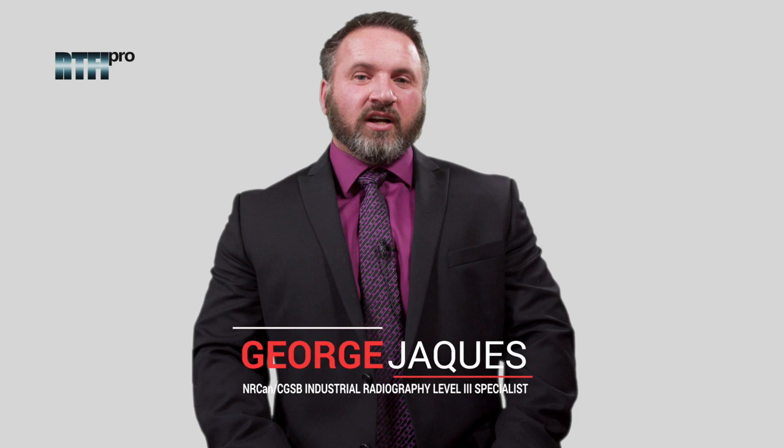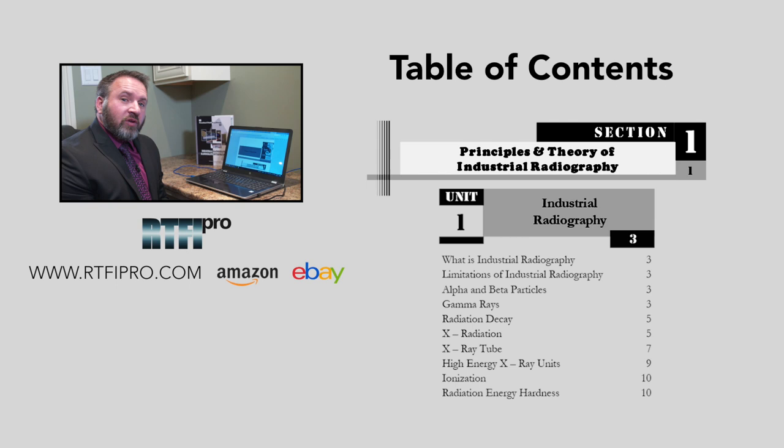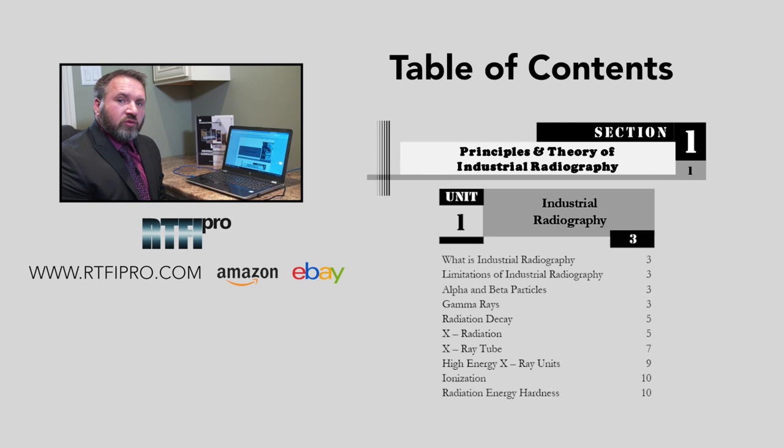Hello everyone and welcome to our channel. My name is George Jakes, co-author alongside Dr. Aziz Rehman of the new book, A Practical Field Handbook, Industrial Radiography. Today we'll be discussing the table of contents in relation to the material within all nine sections of the book. I'm going to walk you through the table of contents to address the material, providing a feel for what's in the book and what might interest you.